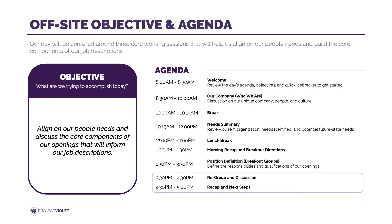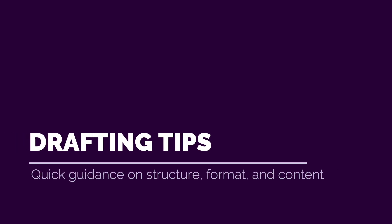After the breakout sessions, I'd recommend bringing everyone back together to regroup and talk about highlights from the discussions. Talk about next steps, which includes consolidating all the great information recorded during the day and then drafting those job descriptions, which will then be sent back out to the team for review and additional input. Now that you have all this great information, it's time to take a step at drafting the job description. Here are some tips on how to structure, format, and draft the content.